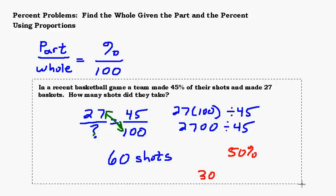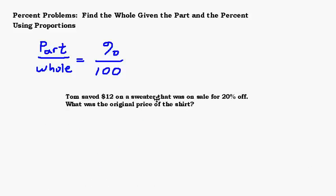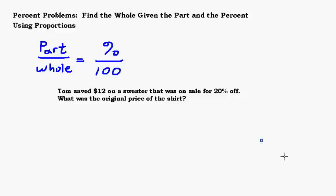Let's look at another example. Maybe try this one using proportions all by yourself. Tom saved $12 on a sweater that was on sale for 20% off. What was the original price of the shirt? The sweater. Let's switch to an x. Let's get fancy here and use a variable instead of a question mark. We know that he saved $12 out of some whole amount x, and the percent is 20%, so that's 20 out of 100.